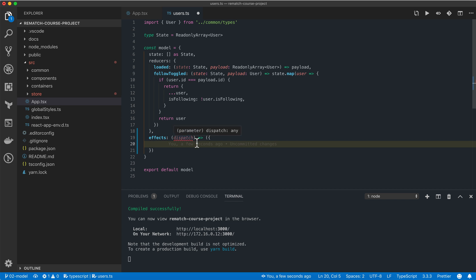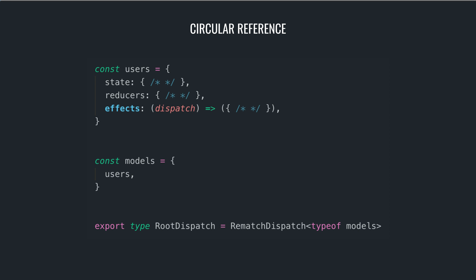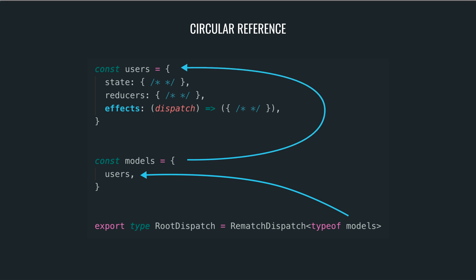The dispatch argument here is the same dispatch that we get inside map dispatch functions, but unfortunately we cannot use our root dispatch type here. The problem is the root dispatch type requires all models to be defined before it can infer the shape of our models, so we cannot use this type while we're still defining it because it would create a circular reference.